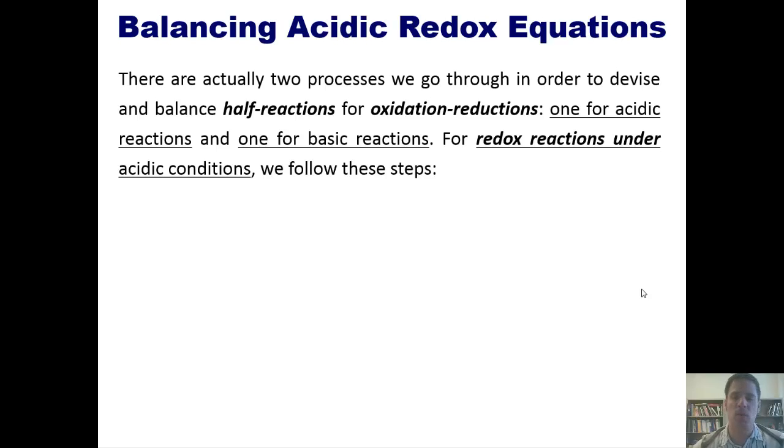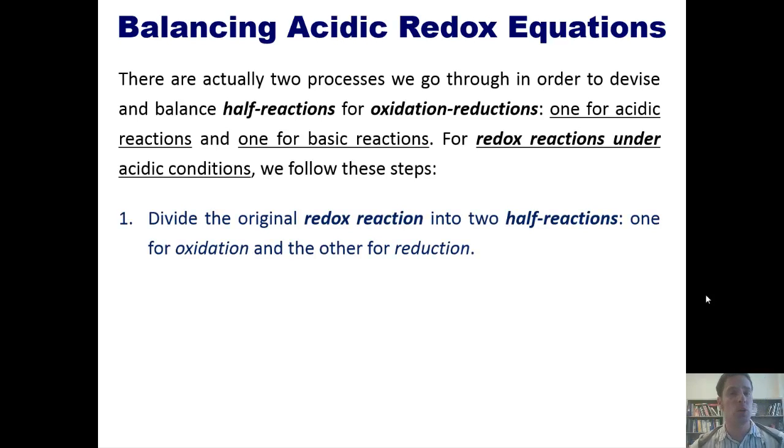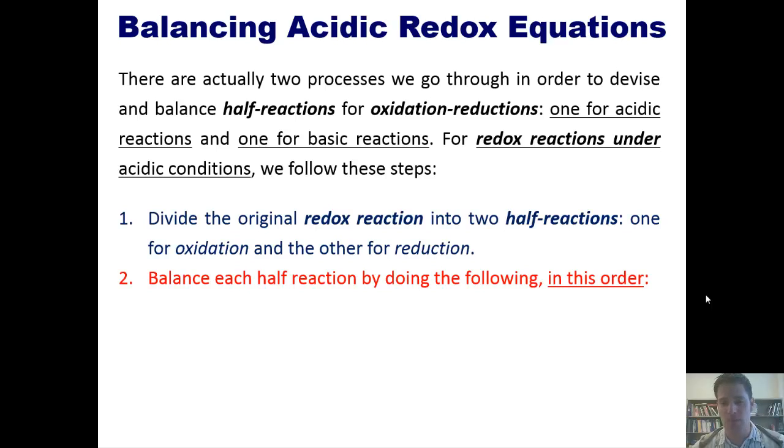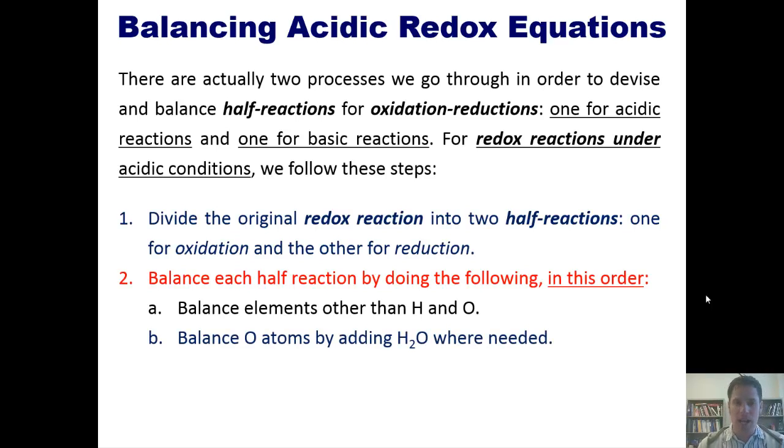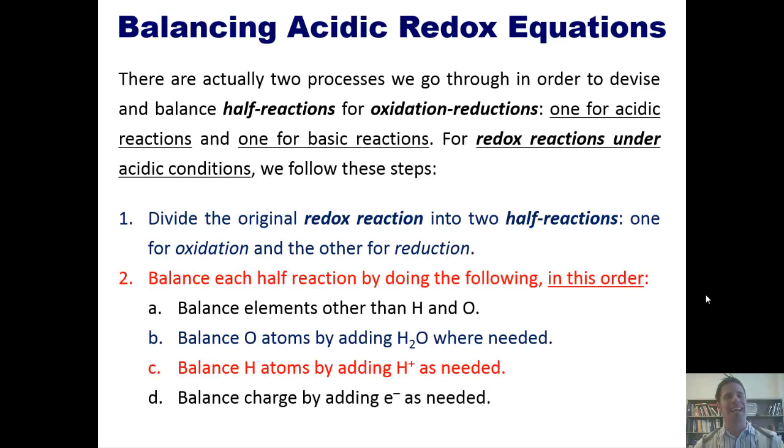Now, there are actually two processes we go through in order to devise and balance half-reactions for oxidation reductions. One is for acidic reactions, and the other is for basic reactions. For redox reactions under acidic conditions, we follow these steps. First, divide the original redox reaction into two half-reactions like I just showed you, one for oxidation and the other for reduction. Second, balance each half-reaction by doing the following in this order. A, balance elements other than hydrogen and oxygen. B, balance oxygen atoms by adding water wherever you have to. C, balance hydrogen atoms by adding H⁺, as needed. And D, balance charges by adding electrons where you need it.